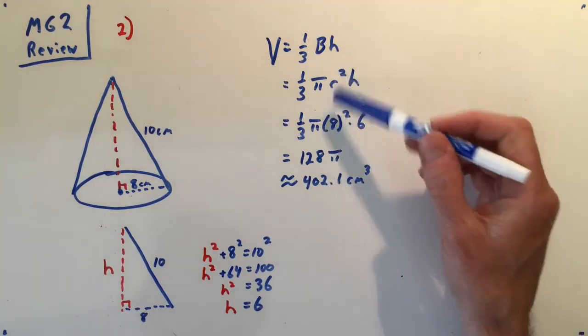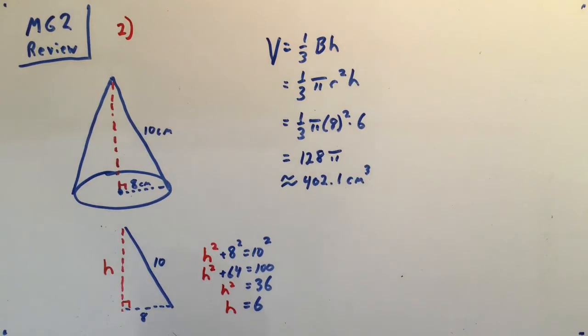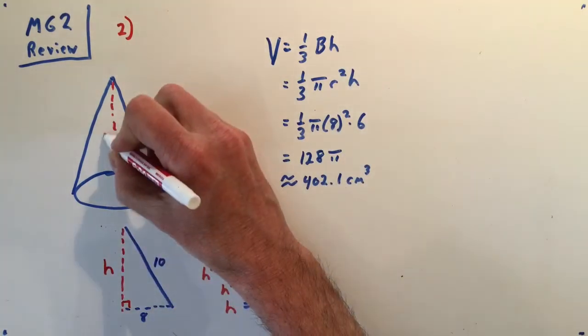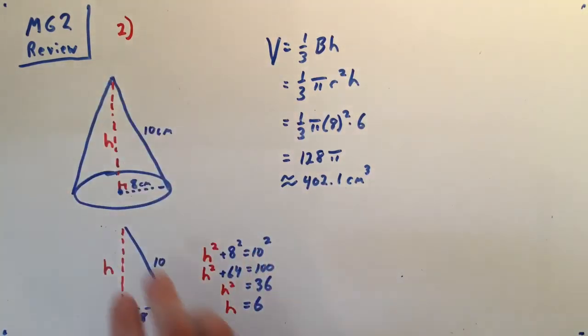I already know the radius, the radius is 8. Now where the hard part comes in is I got to figure out what this height of this cone is right here. So I will remove that right triangle and put it right here, and I will put this length of 8 and that hypotenuse is 10.